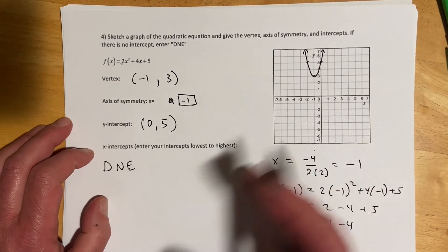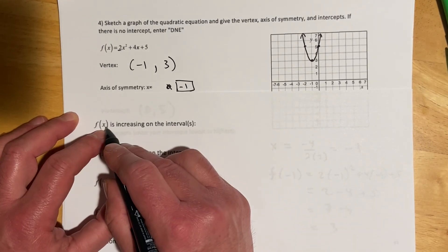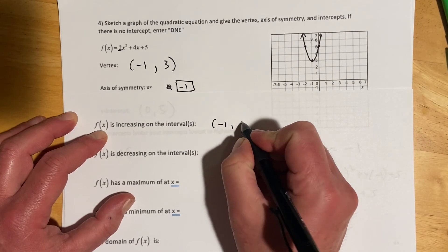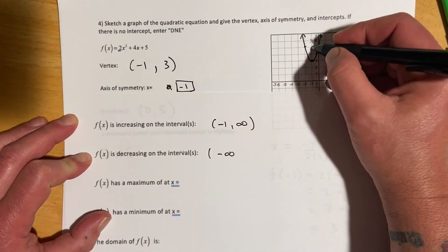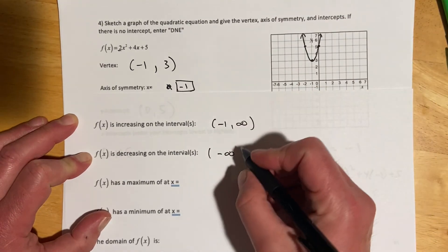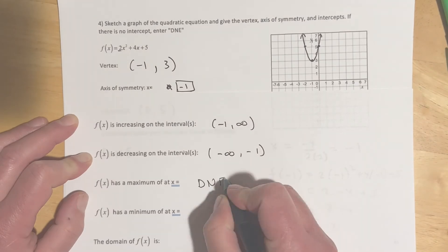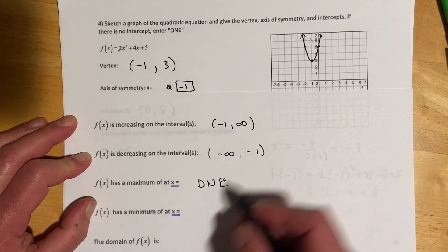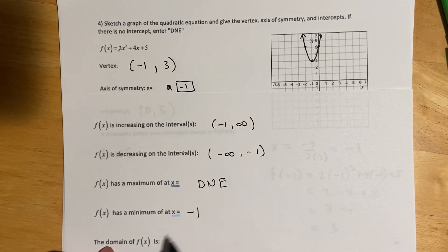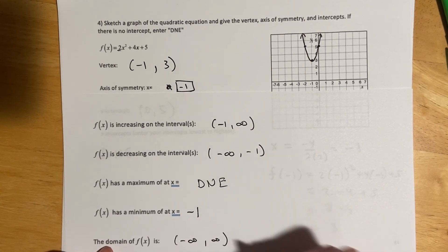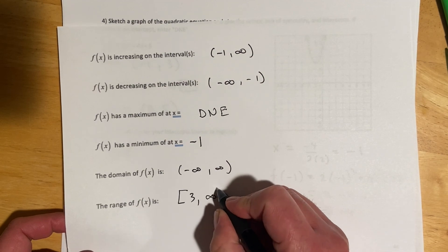Okay, and then there's a little bit more to this one. So, f of x is increasing on the intervals, so that would be from negative 1 to infinity. Decreasing on the intervals, that would be from negative infinity to negative 1. Remember, we say that in terms of the x values it's happening on, not how high or low it got. It has a maximum value, so in this case, the maximum that goes to infinity, so that's a DNE. And then, f of x has a minimum at x equals, so the minimum is occurring at x equals negative 1. And, let's see, the domain is all real numbers, or negative infinity to infinity. And then, lastly, the range. So, it looks like the low point is at 3, so that would be from 3, inclusive, and then to infinity.